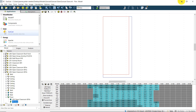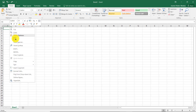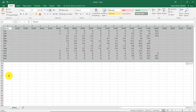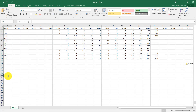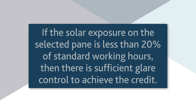We can then export the data in the solar exposure table to Excel for analysing the occupied hours. If the solar exposure for direct sunlight on the selected pane of glass is less than 20% of the standard working hours as stipulated in the credit guidance, then there is sufficient glare control to achieve the Green Star credit.